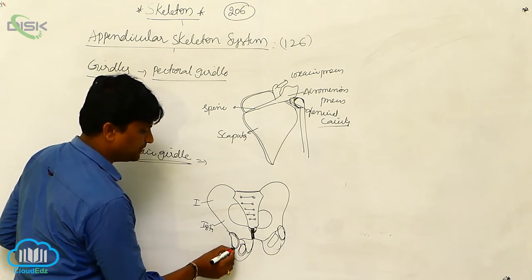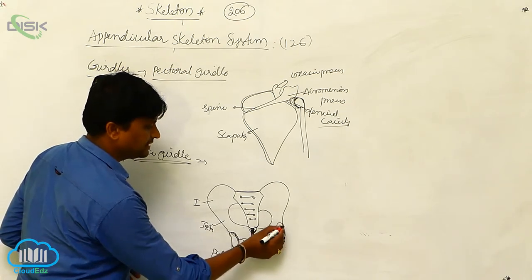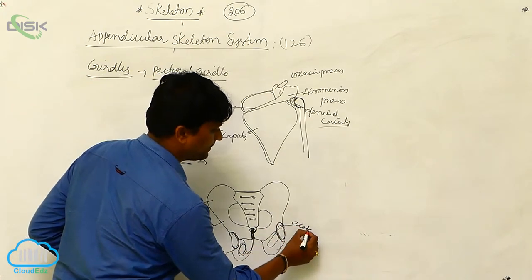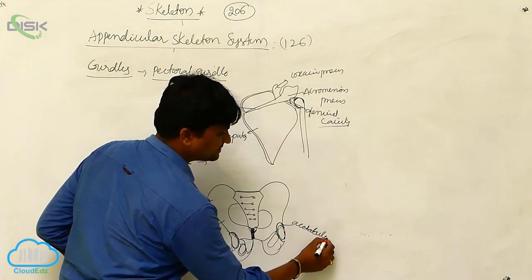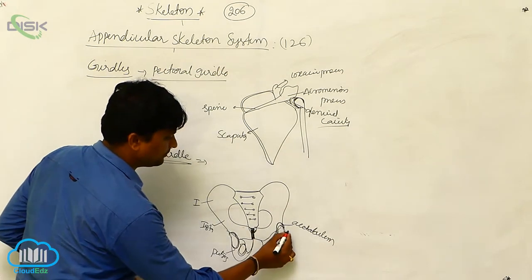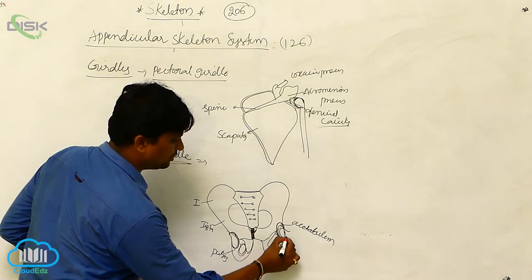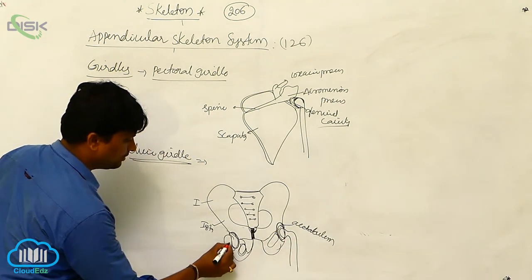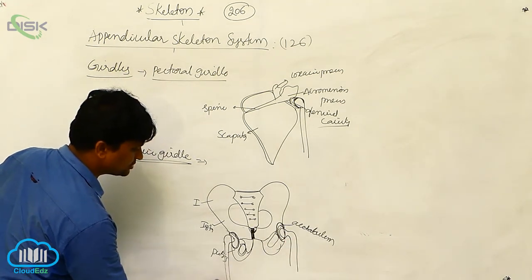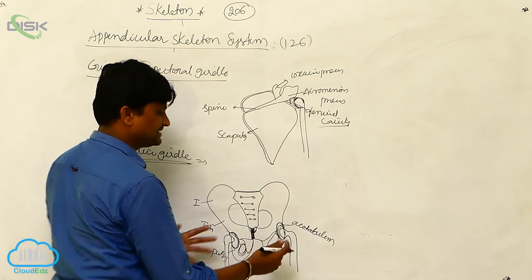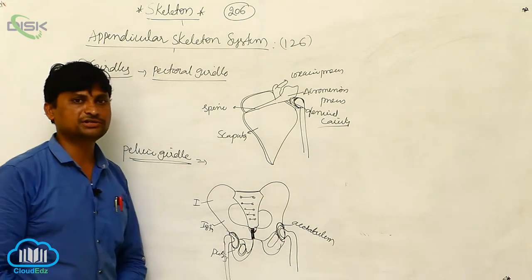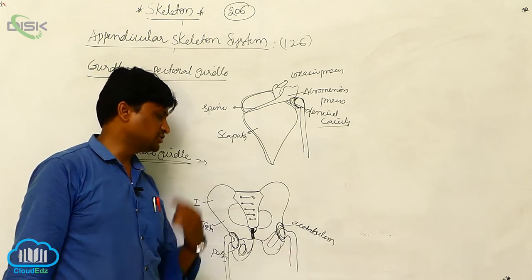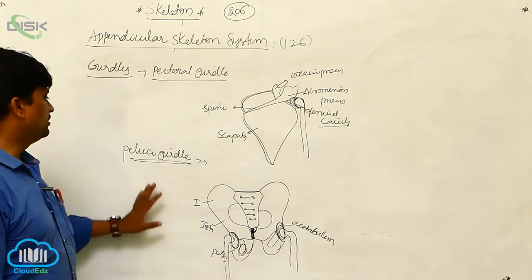Either side of the pelvic girdle gives accommodation to a small cavity called the acetabulum. The ball of the femur, which is larger, is lodged into the acetabulum, giving articulation — the ball of the femur is attached to the acetabulum, forming the hip joint.